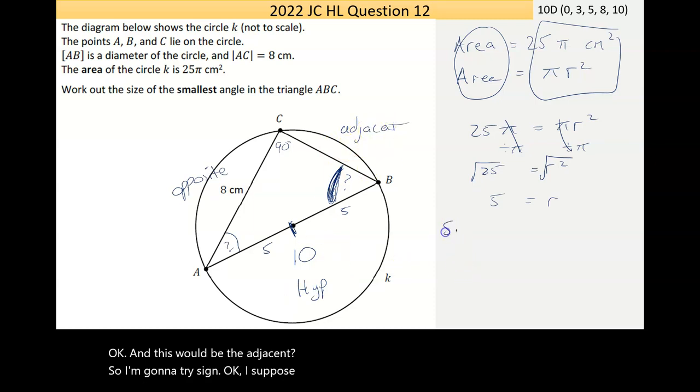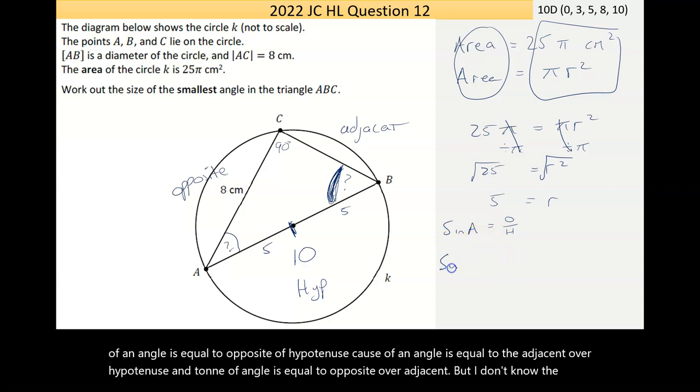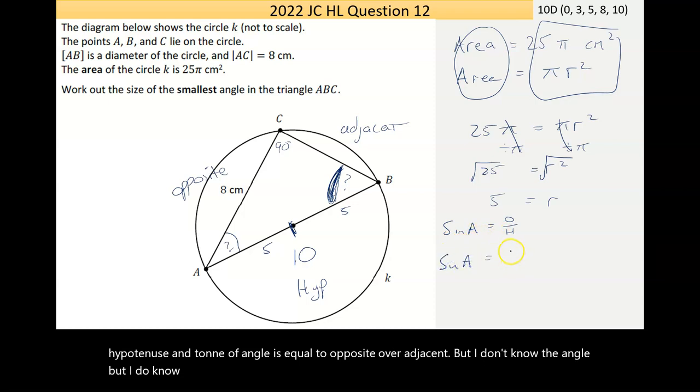So I'm going to try sine. The three trigonometric rules I could use are sine of an angle is equal to opposite over hypotenuse, cos of an angle is equal to the adjacent over hypotenuse, and tan of an angle is equal to opposite over adjacent. But I don't know the angle. But I do know what the opposite is. It's 8.